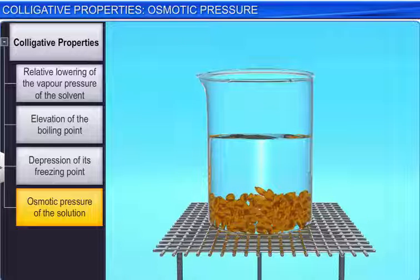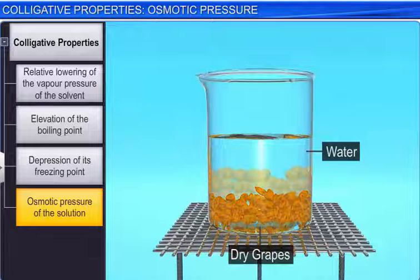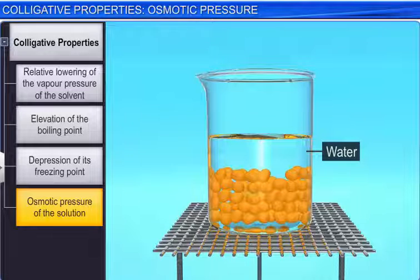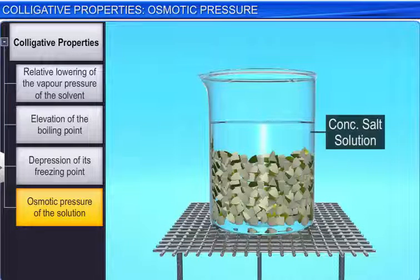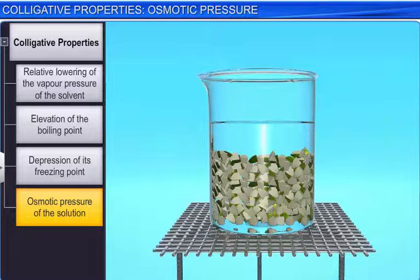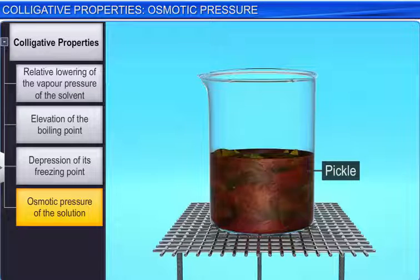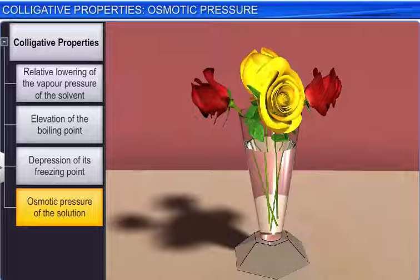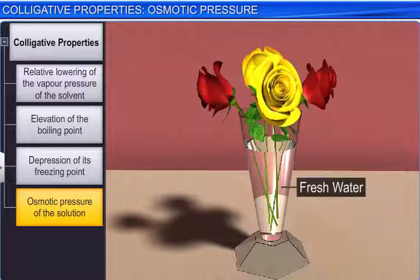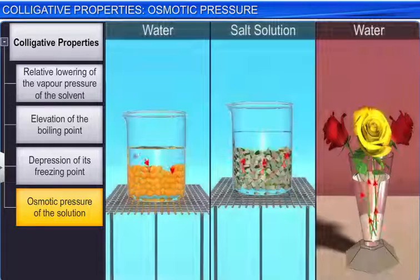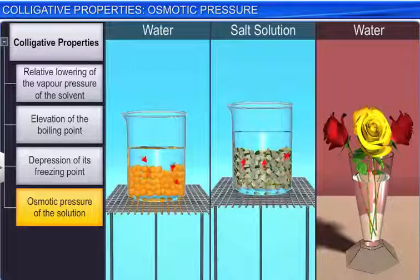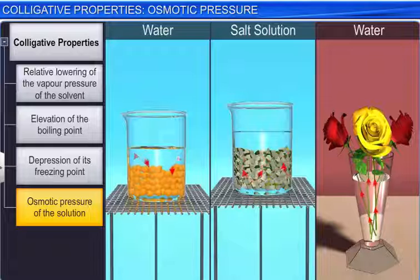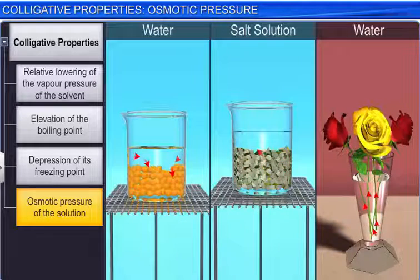Observe these processes carefully. Place some dried fruits and vegetables in water — they slowly swell up and return to their original form. When a raw mango is placed in concentrated salt solution, it loses water and shrivels into a pickle. Similarly, if we place wilted flowers in fresh water, they are revived. All these processes have one thing in common: there was a flow of water molecules either to or from the substance, and all the substances were bound by membranes. This phenomenon is called osmosis.